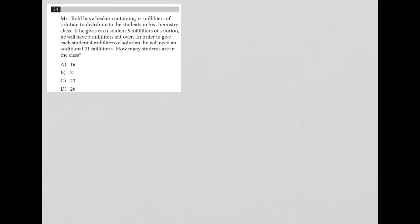This question says Mr. Cole has a beaker containing N milliliters of solution to distribute to the students in his chemistry class — so N mL of solution. If he gives each student three milliliters of solution, he will have five milliliters left over.